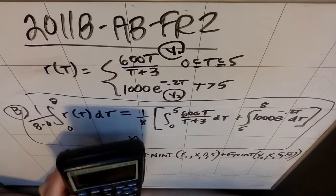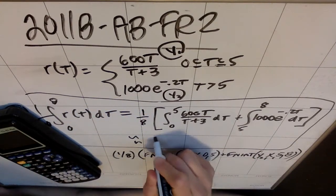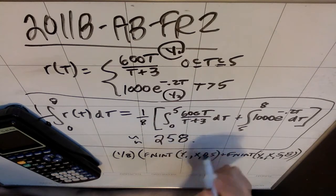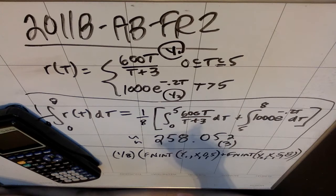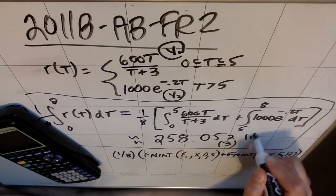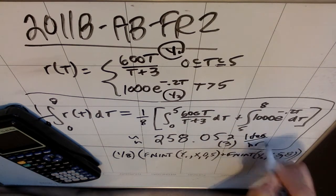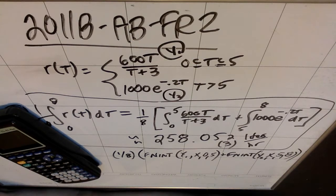And I should get an answer that's like, yep, 258 point, so I'm going to get 258.052 or 3. And I should make sure that I have units here, because this is the first part where I do have units. They want the average rate, and the rate should be in liters per hour. So I should make sure I have units because the problem has units.